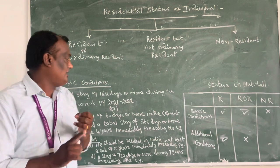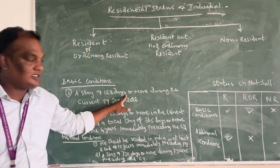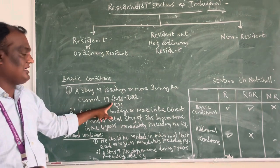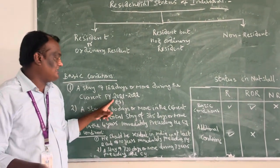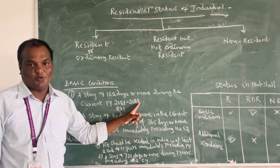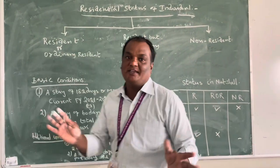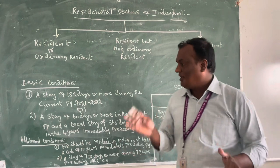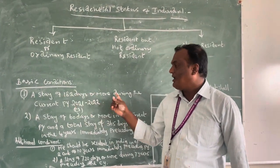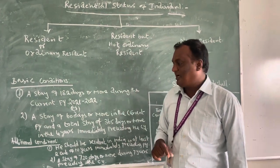The first Basic Condition is a stay of 182 days or more during the current previous year. That means in the previous year 2021–2022, the person should stay in India for at least 182 days or more. This is the first basic condition.